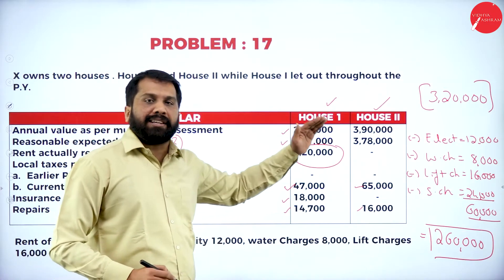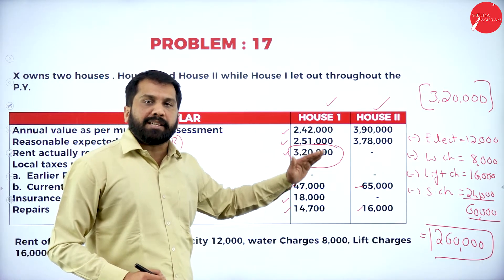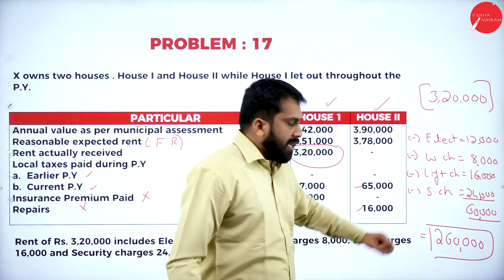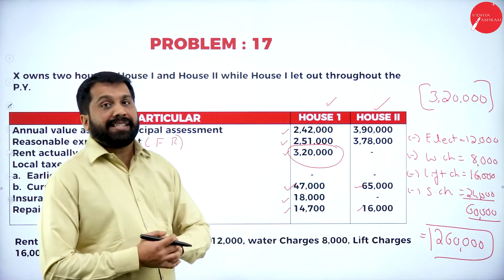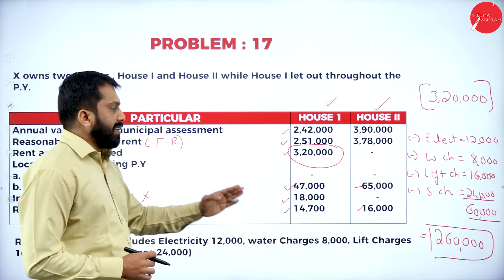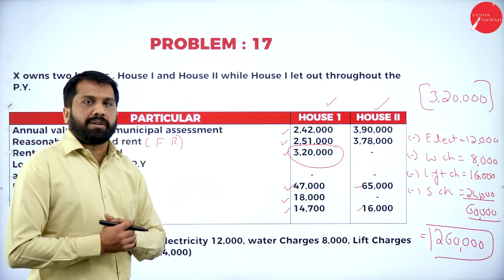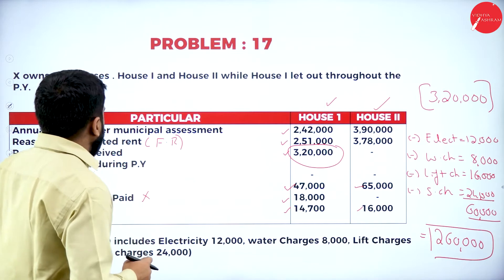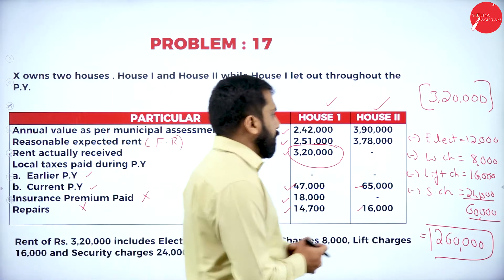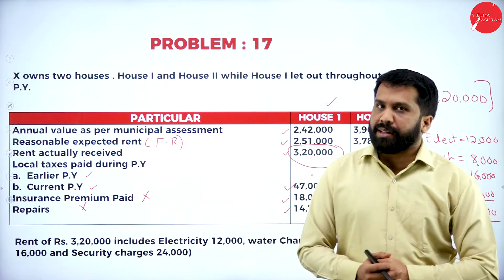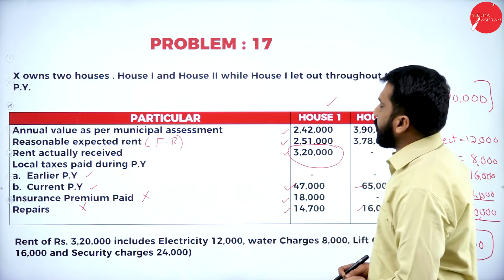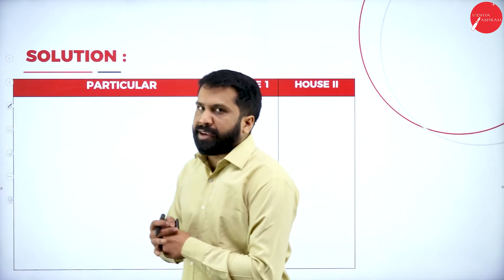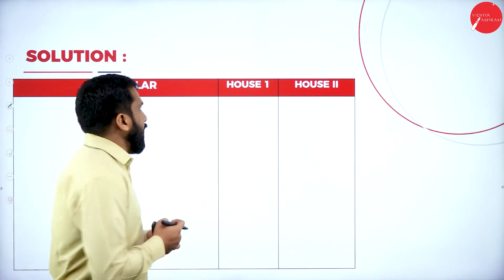From the actual rent received, you are supposed to minus the following expenses and finally arrive at ₹2,60,000 as your final answer. Now we are done with this calculation. We'll go to the normal format for the final answer.